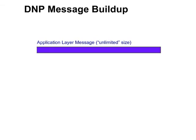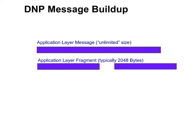A DNP message can be virtually any size. A large message will be broken up into application layer fragments. An application layer fragment is typically 2,048 bytes, although it can be smaller or larger. The DNP specification states that the application layer fragment size must be configurable to a size no larger than 2,048 bytes. A device may also allow smaller sizes to be configured.